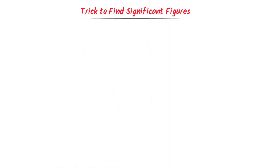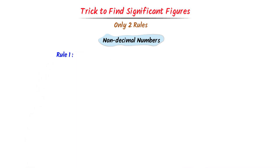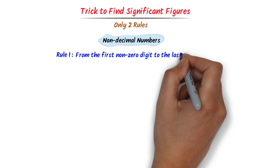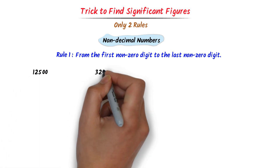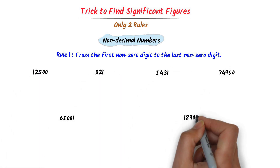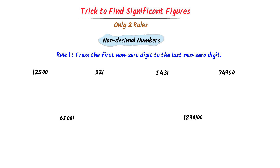Super fast trick to find significant figures. I will teach you only two rules through which you can easily find significant figures. Firstly, we will find significant figures of non-decimal numbers. The first rule is to go from the first non-zero digit to the last non-zero digit. For example, consider these numbers and find significant figures.